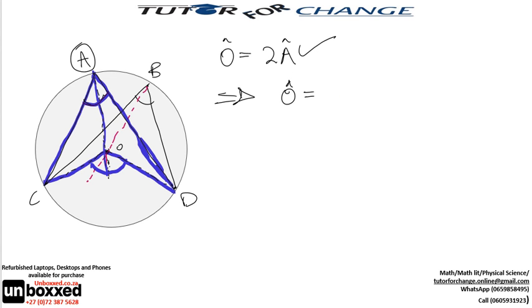All the steps of the proofs that we have done are there. They have been applied here. Angle O is 2B. Here, you are not proving, you are applying the theorem.